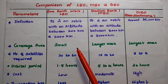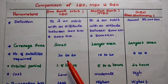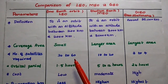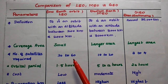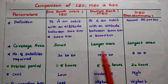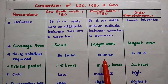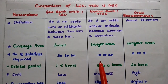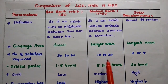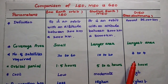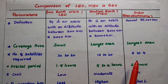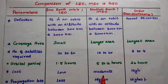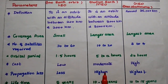Due to the small coverage of LEO, we need 30 to 60 satellites to cover the entire globe. For MEO, we need 10 to 20 satellites to cover the entire earth's surface. For GEO, we need only 3 to 4 satellites to cover the entire globe.